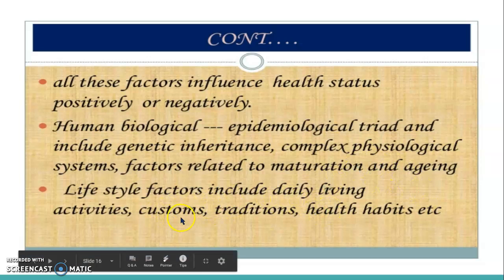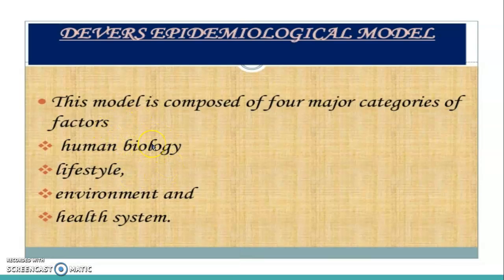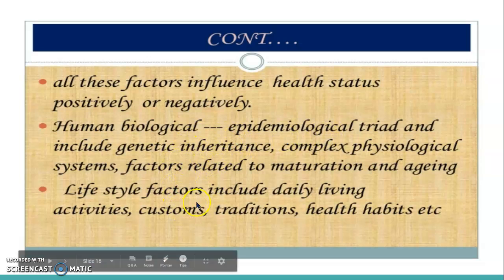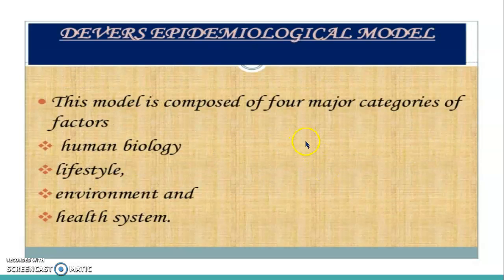Lifestyle factors include daily living activities, customs, tradition, and health habits. So the four major categories of the diverse epidemiological model are: human biology — which covers epidemiology, germs, and genetic inheritance; lifestyle factors — tradition, customs, activity, and health habits; environmental factors — physical, biological, social, and spiritual components around yourself; and healthcare system — the availability, accessibility, adequacy, and use of health care services at different levels. All these will cause a disease, and that is what the diverse epidemiological model explains.